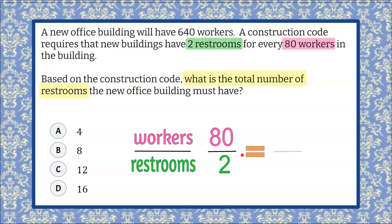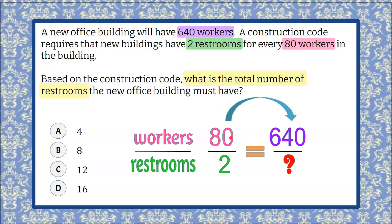We're going to create an equivalent ratio, which forms a proportion. We want to determine: if we have 640 workers in this new office building, how many restrooms will we need? So we want to find the relationship from 80 to 640. I know that 8 times 8 is 64, so 80 times 8 is 640.